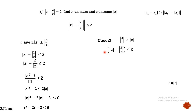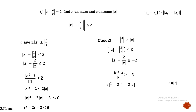Changing the sign on both sides of the inequality also flips the inequality symbol. So modulus of Z squared minus 2 over modulus of Z becomes greater than or equal to minus 2. Moving terms gives modulus of Z squared plus 2·|Z| minus 2 ≥ 0. Letting T equal modulus of Z, we get T² + 2T − 2 ≥ 0.